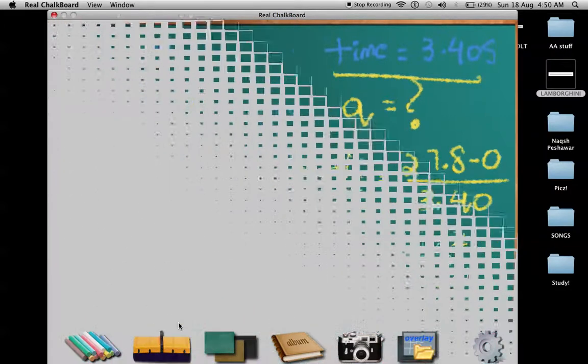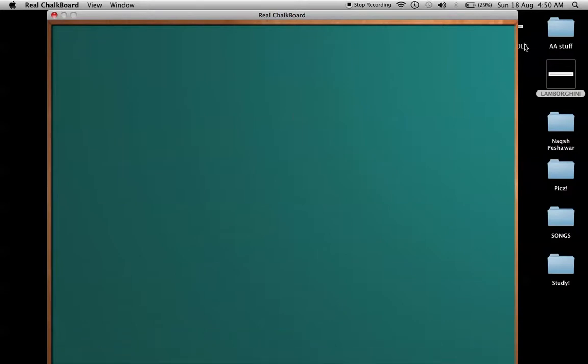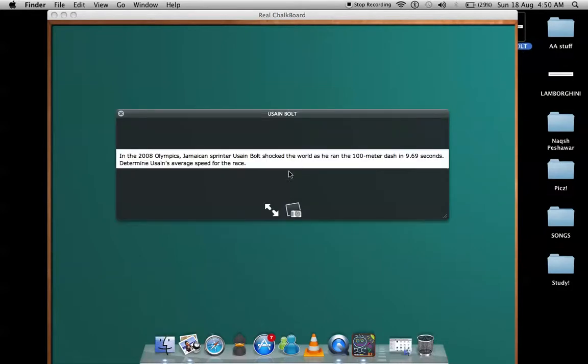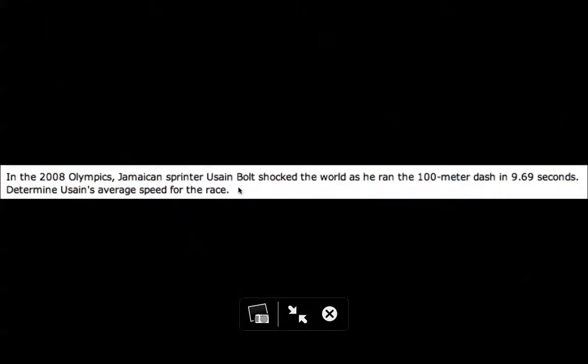As we know, Lamborghini is one of the fastest cars. This example is about one of the fastest people on earth. In the 2008 Olympics, Jamaican sprinter Usain Bolt shocked the world as he ran the 100 meter dash in 9.69 seconds.